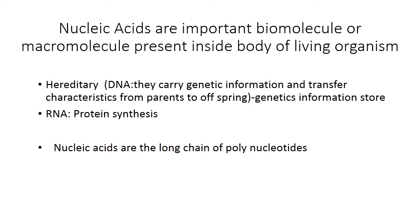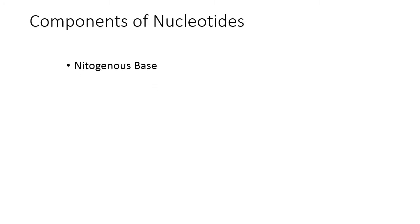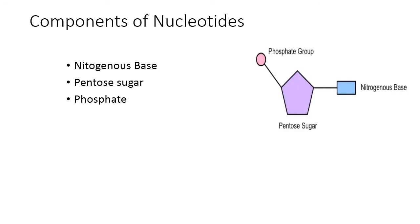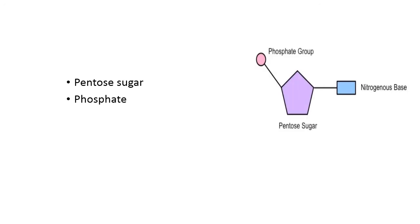The type of information stored is genetic information. Nucleic acids are long chains of polynucleotides, meaning they are made up of polynucleotide units. The components of nucleotides include a nitrogenous base, a sugar, and a phosphate group in their structure.